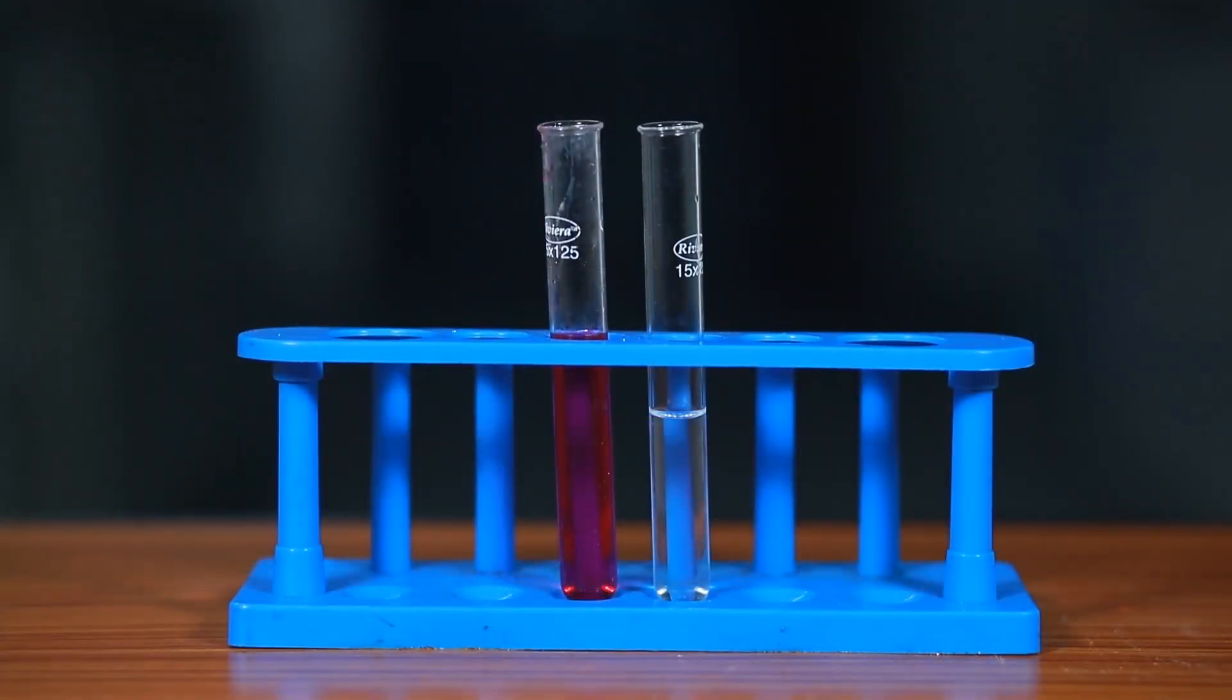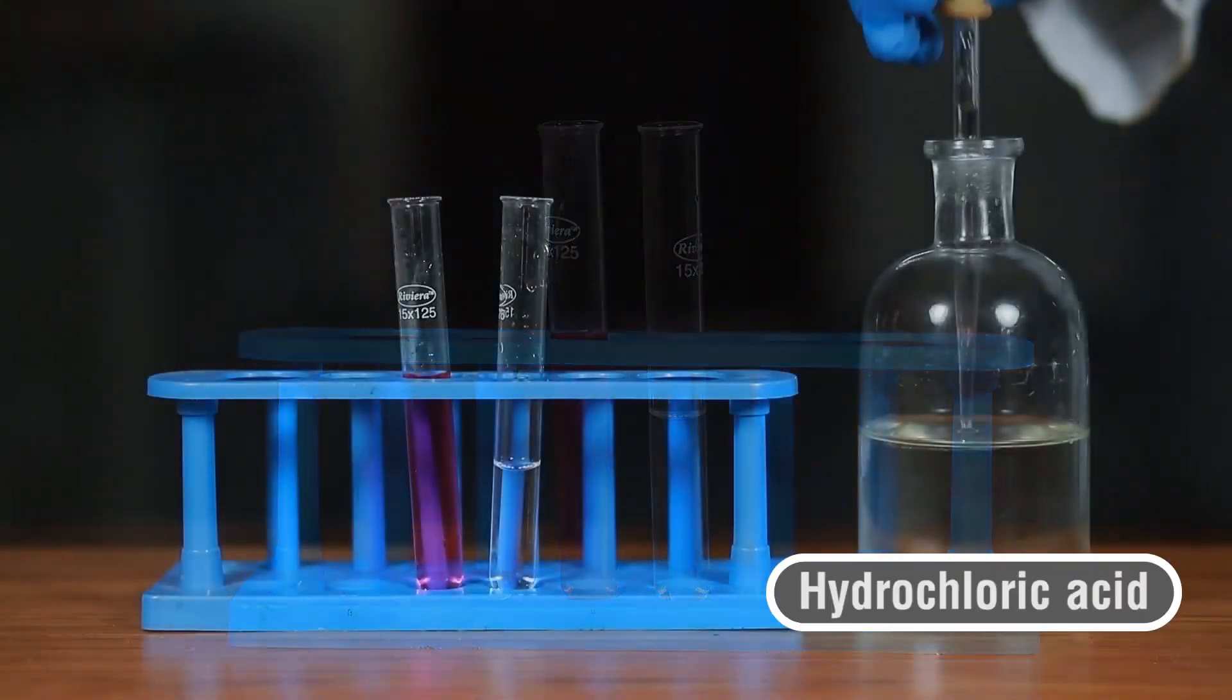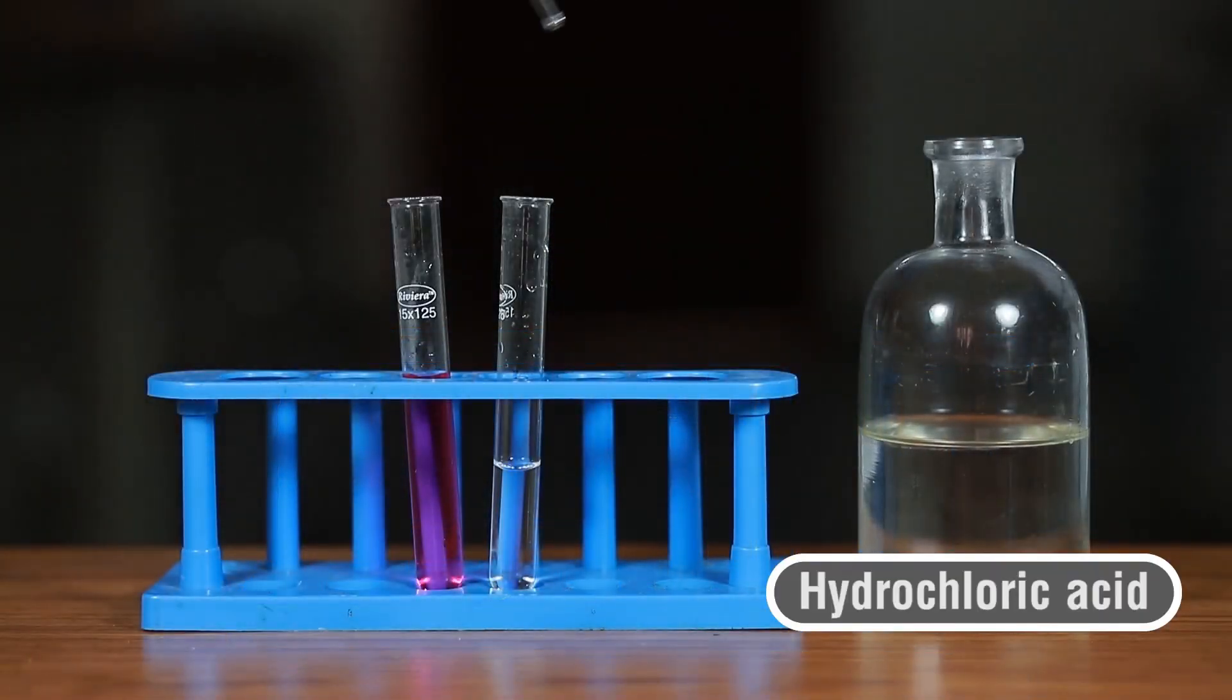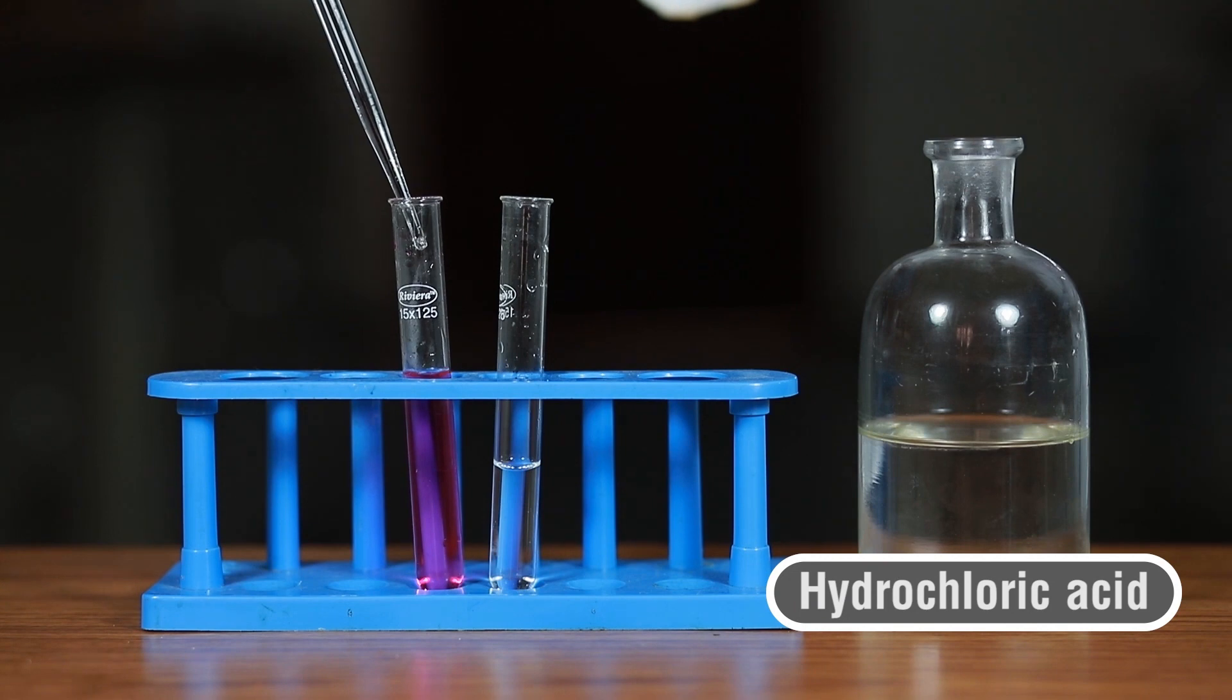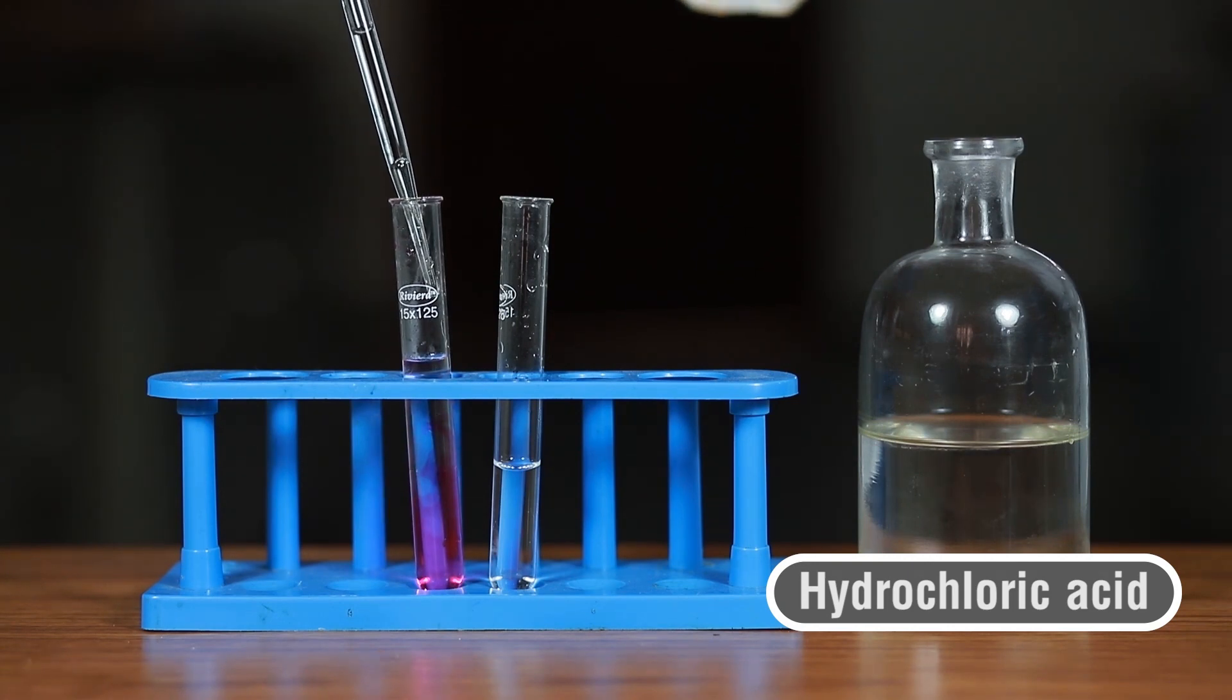If hydrogen ions, H+, as found in an acid, were added to the pink solution, the equilibrium would switch and the solution would be colorless. Adding hydroxide ions, OH-, as found in bases, will change the phenolphthalein into its ion and turn the solution pink.